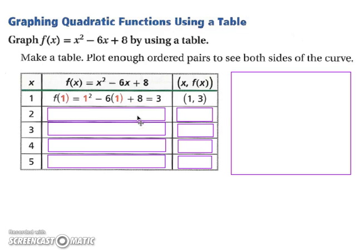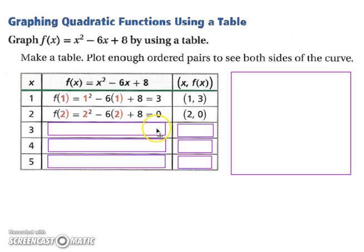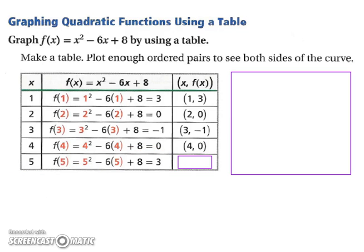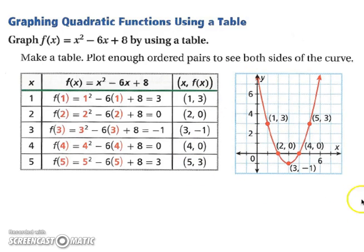Take a moment and pause the video and try the next ones on your own. With an input value of 2, you get an output of 0, so your coordinate is (2, 0). For an input of 3, you get negative 1, so your coordinate is (3, -1). For 4, you have an output of 0, so your coordinate is (4, 0). And for 5, the output is 3, so the coordinate is (5, 3). When you plot these points, you will see a nice curve when you connect them — there is your quadratic function.